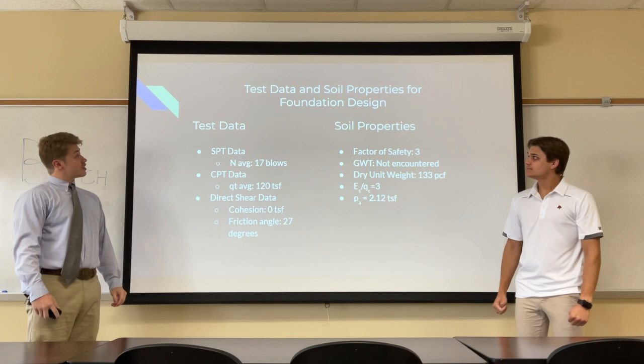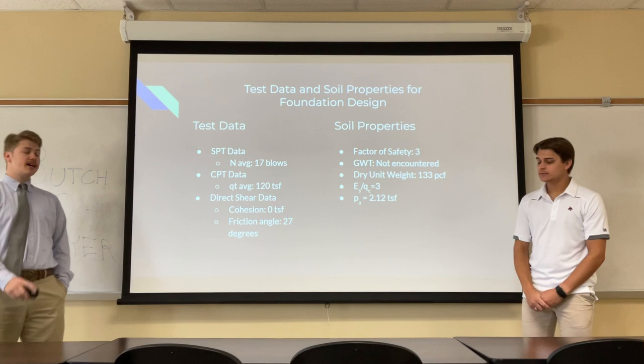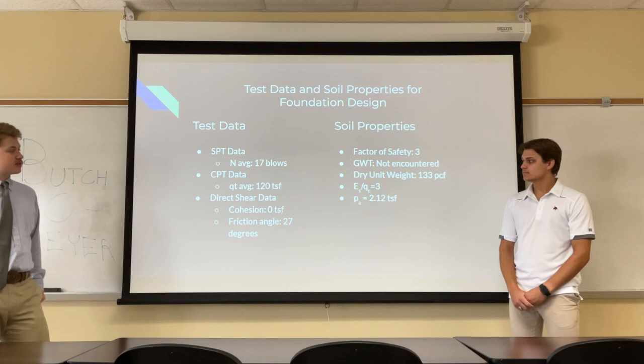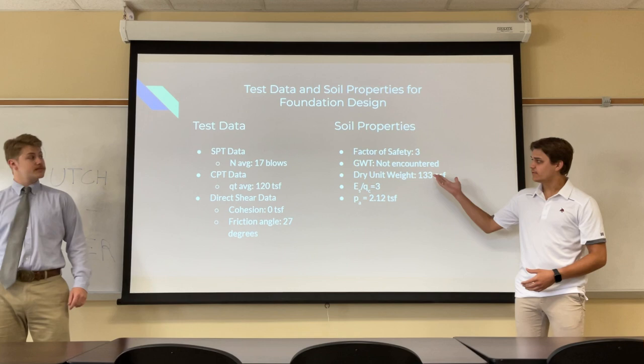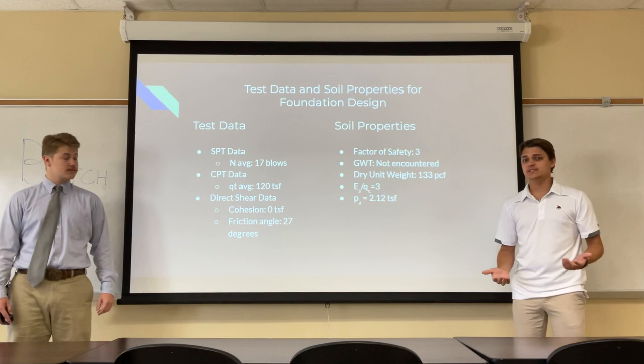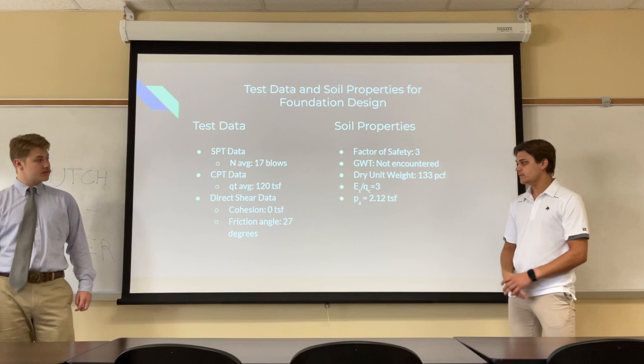This is our test data and soil properties for our foundation design. We had an average N-count of 17 blows for SPT data. For our CPT data, we got a QT average of 128 TSF. From our direct shear data, we assumed a cohesion of 0 TSF to be on the cautionary side and a friction angle of 27 degrees. For our soil properties, we used a factor of safety of 3 in all equations. Groundwater table was not encountered. Our dry unit weight is 133 pounds per cubic foot, our QC value is ≥3, and our atmospheric pressure PA is 2.12 tons per square foot.